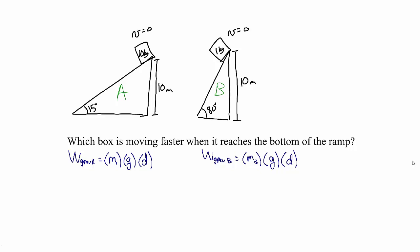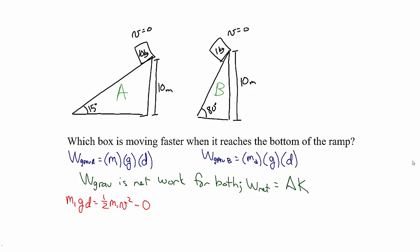In both cases, the work done by gravity is the net work done, which equals the change in kinetic energy. For the first box, m1 times g times d equals the change in kinetic energy — the final kinetic energy, one half m1 v squared, minus the initial kinetic energy. Since this box is starting from rest, the initial kinetic energy is zero. For the second box it is the same: m2 times g times d equals the final kinetic energy, one half m2 v squared, minus the initial kinetic energy of zero.